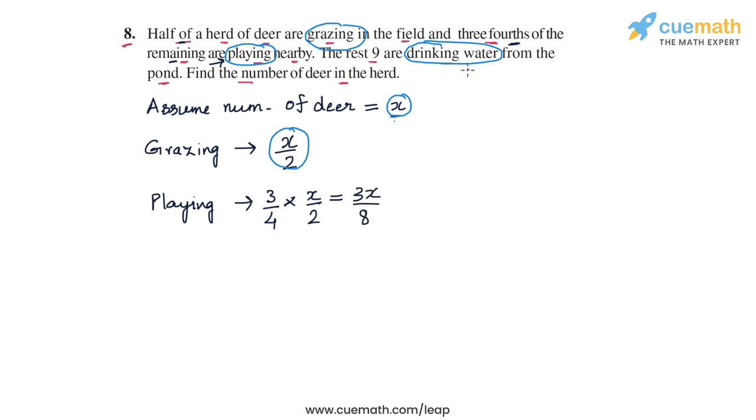And what about the number of deer who are drinking water? This is given to us as 9. So now we have something very interesting.